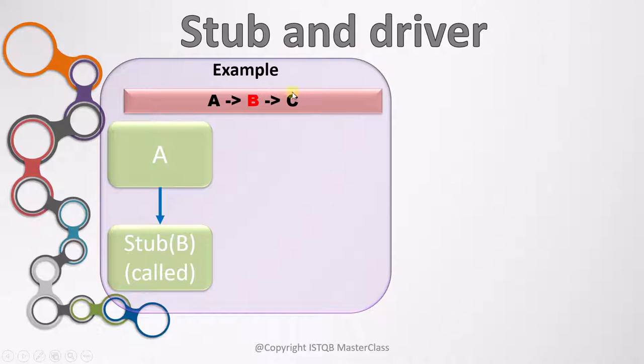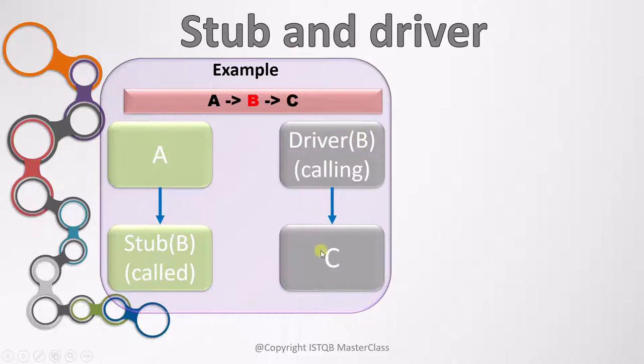Now when we test component C, the situation changes. Now B is the one calling C so that component C can be tested. Since B has not been implemented, we create a dummy variable B which calls C. So here B is a calling function, whereas here B was called by A.